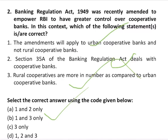Section 35A of the Banking Regulation Act vests power in the RBI to give directions to banks and take action to prevent the affairs of any banking company being conducted in a manner detrimental to the interest of depositors or in a manner prejudicial to the interest of the banking company.